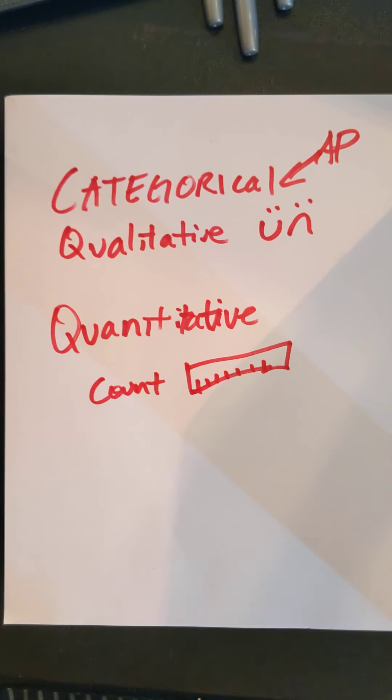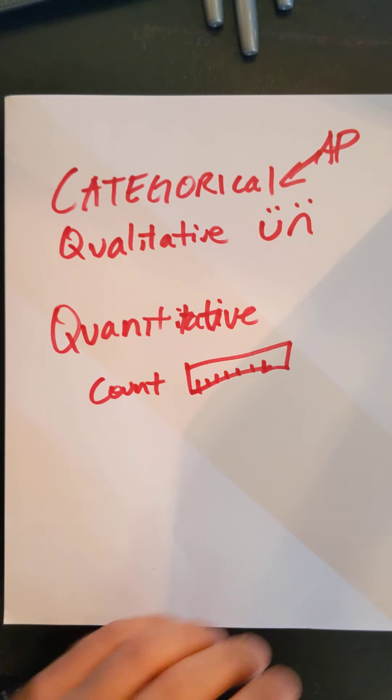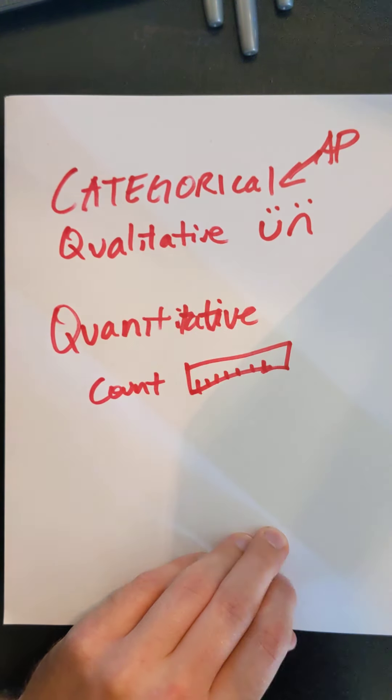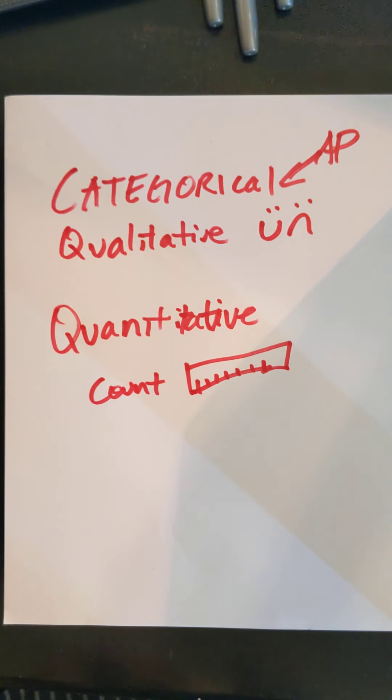So you can have quantitative measures and qualitative measures that are somewhat interrelated, but remember that categorical, that's a type. Like, is it happy? Is it sad? Is it blue? Is it yellow? Is it true or false?